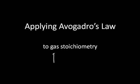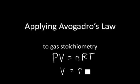First, let's remember the relationship from the ideal gas law: pressure times volume of the gas is equal to the number of gas moles times the gas constant times the temperature. Solving for volume, we get volume equals n times R times T divided by P.